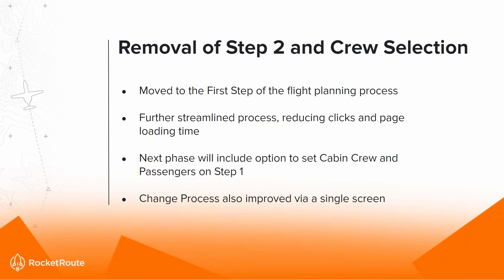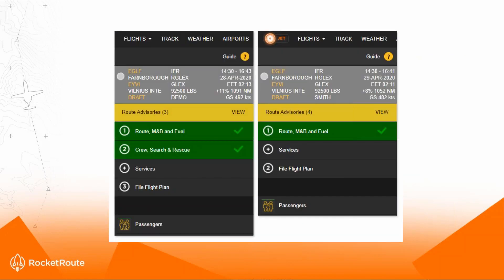The next improvement, which went live earlier this week, is the removal of Step Two and the migration of crew selection into Step One. This further streamlines the process, reducing the number of clicks and page-loading times, enabling faster and more efficient flight planning. A further improvement is also coming with cabin crew and passenger selection also being available on Step One. The change process for an already-filed flight plan will also be on a single screen. The left side shows the previous three-step process; the right side shows the new process with crew selection and search and rescue moved into Step One.